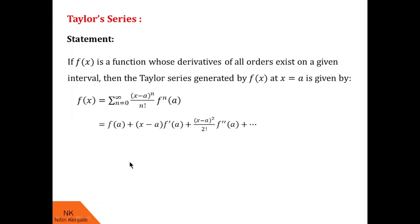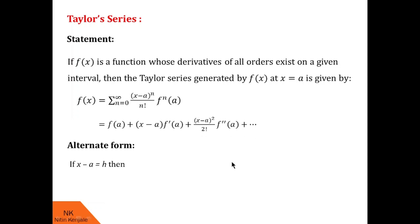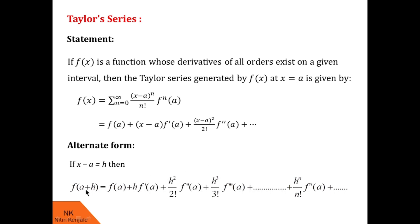We have an alternate form of Taylor series. To find this alternate form, substitute x - a = h in the first form. So x becomes a + h. On the left-hand side we will have f(a + h), and on the right-hand side we will have f(a) + h·f'(a) + h²/2! · f''(a) and so on. I hope you understood both forms of the Taylor series.